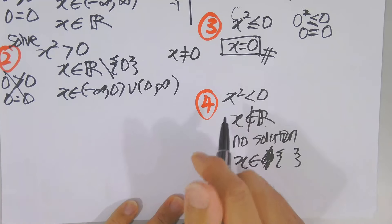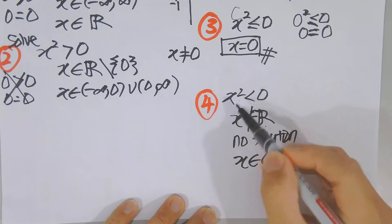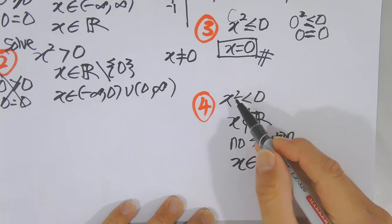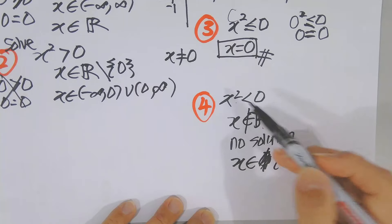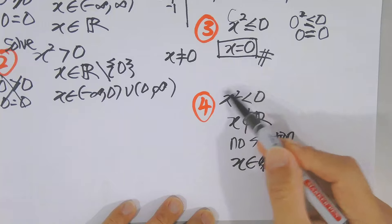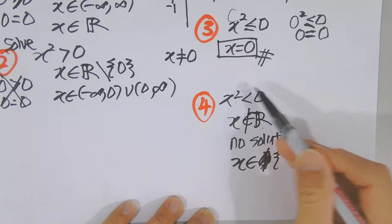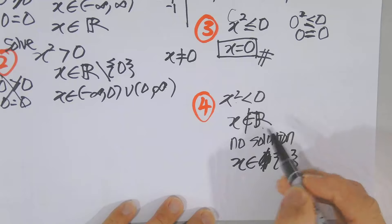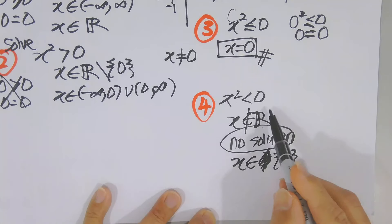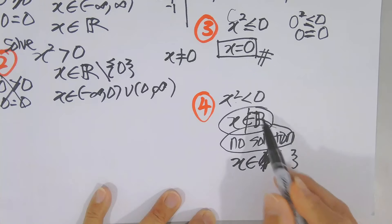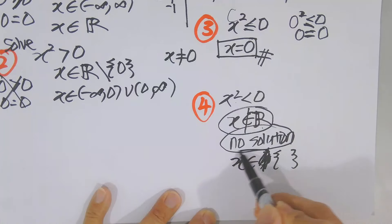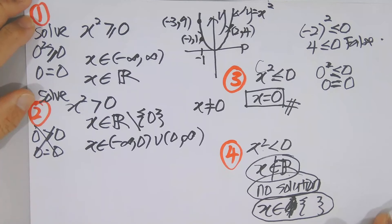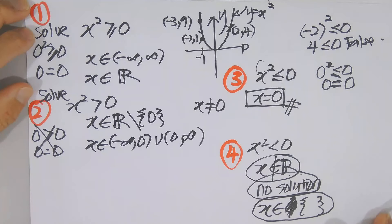Just now we could still accept zero for x² ≤ 0, but now there's no 'equal to.' Do you believe that any number, when squared, gives a negative result? That is impossible — impossible means no solution. It is not real. So the answer is the empty set. These are the four foundational cases you should study before tackling quadratic inequalities.